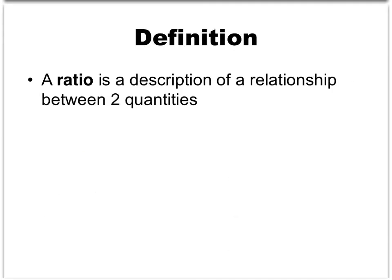To start off with, let's define the word ratio. A ratio is a description of a relationship between two quantities. The important words here are relationship and two quantities. So any time that we've got some scenario where we've got two different quantities involved, we might be able to describe it with a ratio.